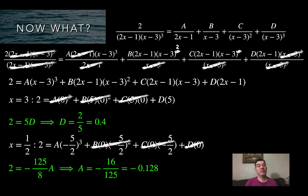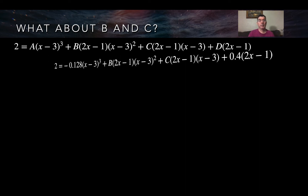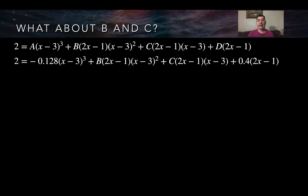So I have values for D and A. For B and C, I've already used all values that make a factor equal 0. Before plugging in more values, I replace A with negative 0.128 and D with 0.4, so I only have B and C to deal with.